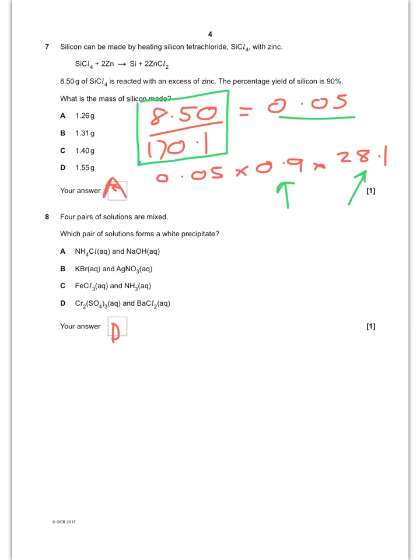Four pairs of solutions can mix which forms a white precipitate. Okay, if you whiz around, hopefully you remember from your testing of ions that barium sulfate, this is the test for the sulfate ion, that will form a white precipitate. So it is D.